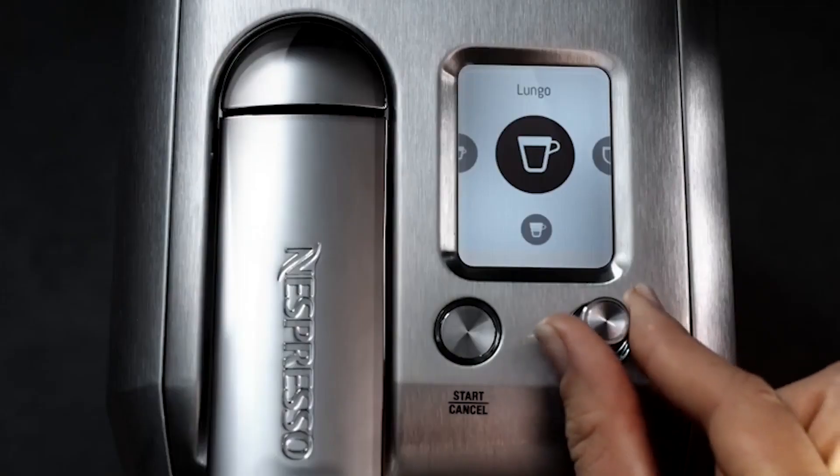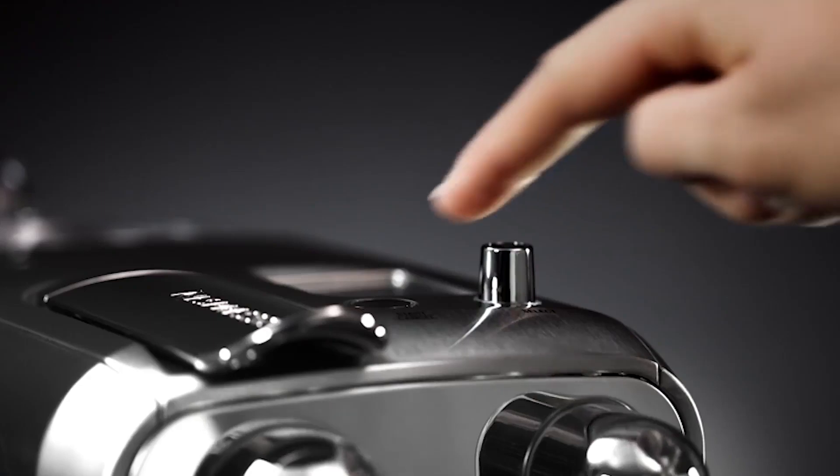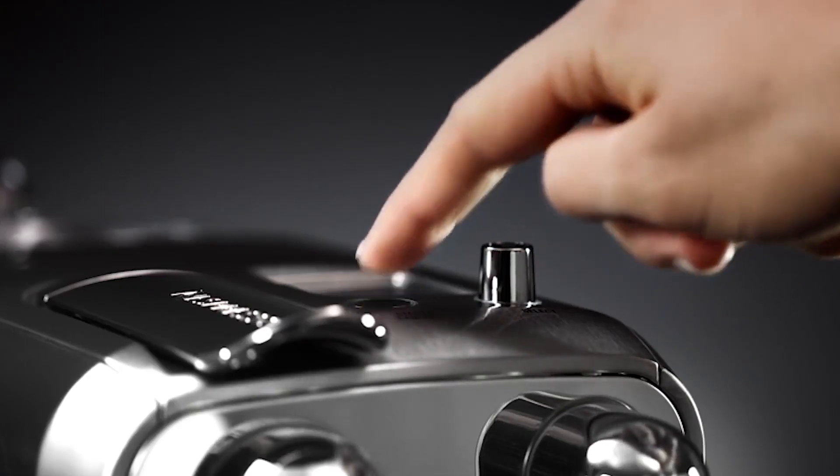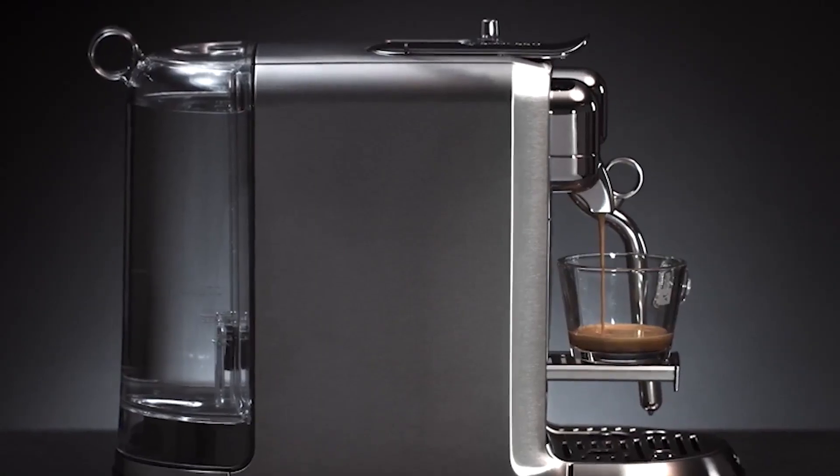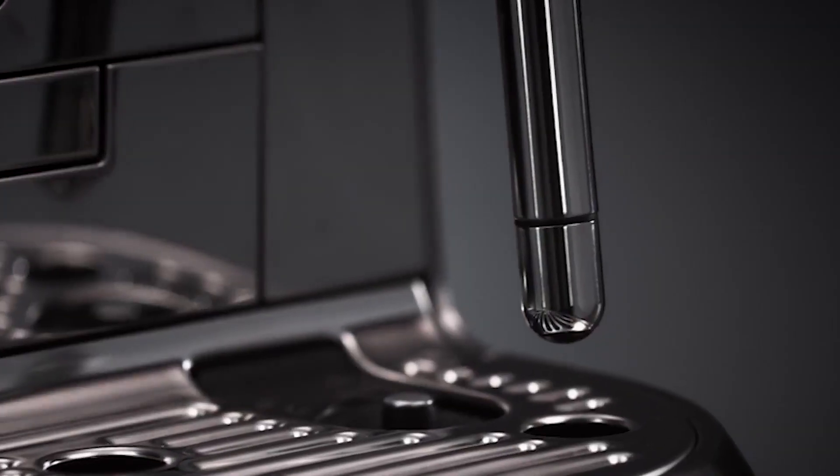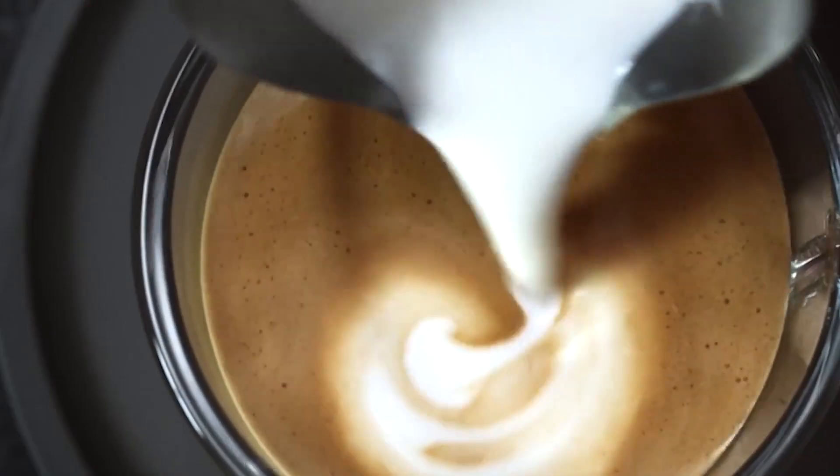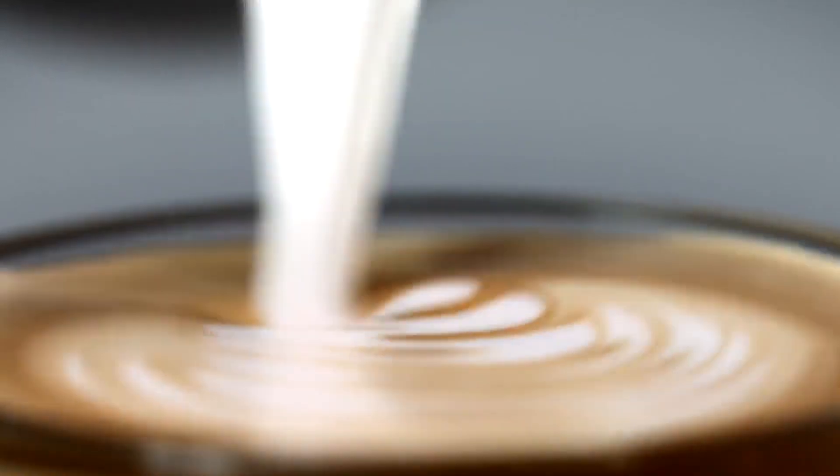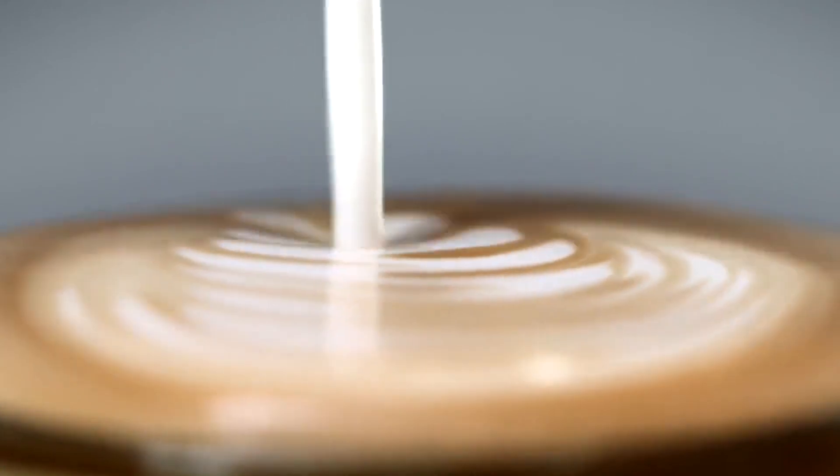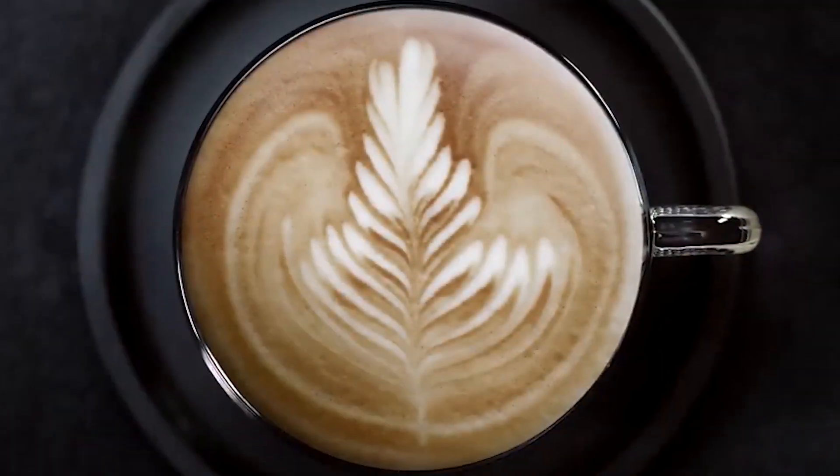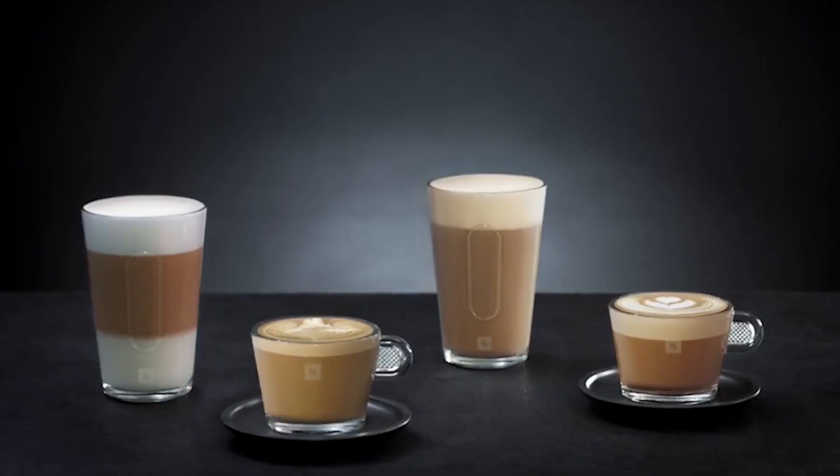Ristretto, espresso, lungo, latte, cappuccino, flat white, or latte macchiato. Select a size and pick a milk temperature and texture. Because the Creatista Plus belongs to the original line, it is louder during the brewing process, thanks to those 19 bars of pressure, than the Vertuo line. It doesn't work with Vertuo line pods or make regular coffee either.